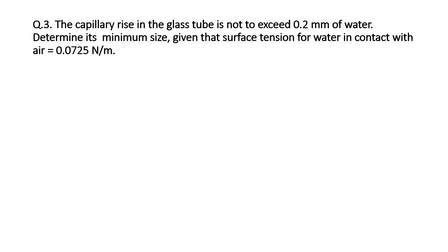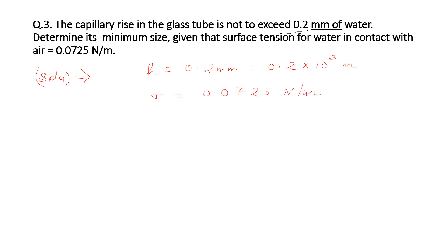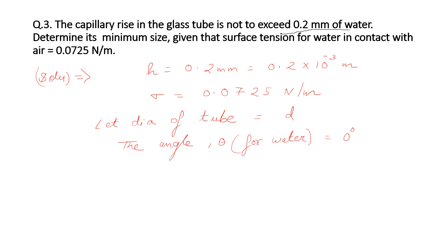The third question is based on capillarity. We are given that the capillary rise in a glass tube must not exceed 0.2 mm of water, so h = 0.2 mm = 0.2 × 10⁻³ m. The surface tension for water is given as 0.0725 newton per meter. We need to find the diameter d of the tube. The contact angle for water and glass is taken as 0 degrees, and density of water is 1000 kg/m³.